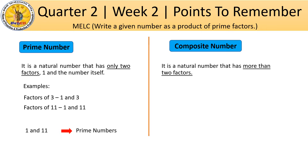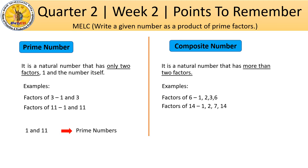A composite number is a natural number that has more than two factors. Look at examples. The factors of 6 are 1, 2, 3, and 6. The factors of 14 are 1, 2, 7, and 14.